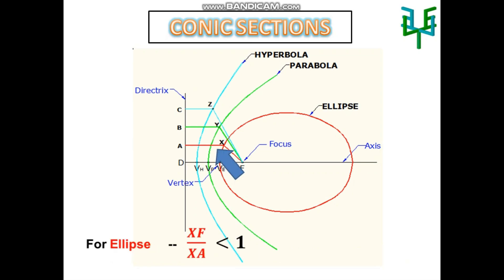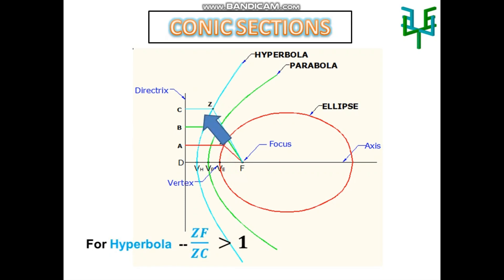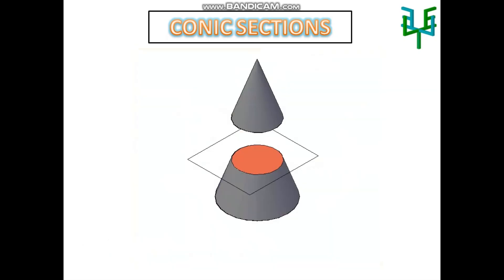The ratio of distances is called eccentricity ratio. For an ellipse, this eccentricity ratio is always less than 1. For a parabola, eccentricity ratio is equal to 1. And for hyperbola, eccentricity ratio is always greater than 1. Thank you.